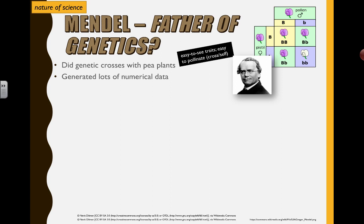This guy didn't know about the existence of genes and alleles, yet his numbers and predictions all check out. All the other evidence that's accumulated now with our understanding of DNA and alleles and genetics still matches with what this guy put forth. That's why people like to crown him the title of father of genetics.